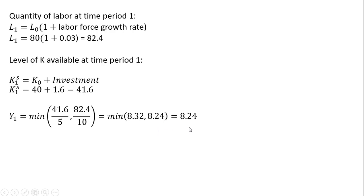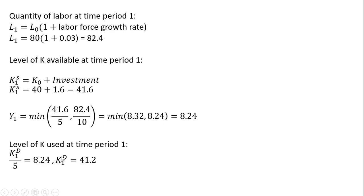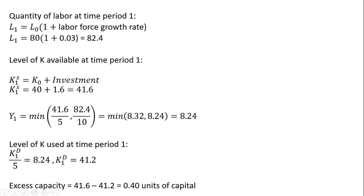So output will be 8.24 in this case. Since output is 8.24, we don't have to use all the capital that is available. The level of capital used at time period one is calculated by taking K divided by 5 and setting it equal to our output. Multiplying through by 5: 5 times 8.24 gives capital used of 41.2, which is less than the capital available of 41.6. So we have excess capacity of 0.4 units of capital. That's the example — I hope you found this video helpful.